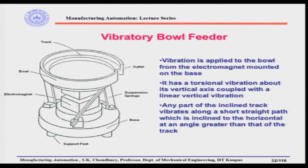When vibration is imparted to the bowl, the electromagnet produces two types of vibration: a linear vertical vibration along the vertical axis, and a torsional vibration. As a coupling of these two, the part moves in a short, nearly straight direction inclined to the track at an angle more than the angle of inclination of the track.